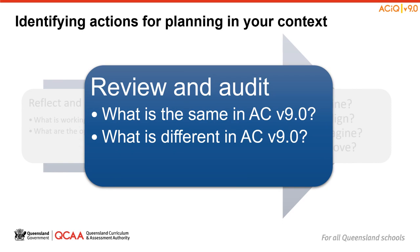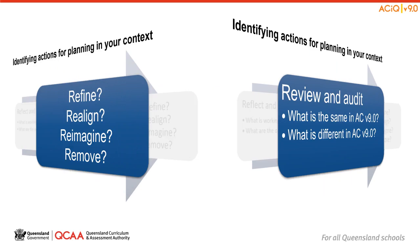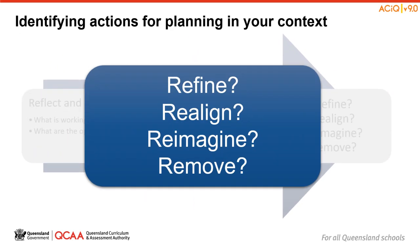As we have worked through both sessions 1 and 2, we've been in the review and audit phase, considering the similarities and differences we've observed in the Understand this Learning Area and Curriculum Elements sections of the Australian Curriculum version 9 for English. Let's now turn our attention to what these similarities and differences might mean for our Teaching and Learning and Assessment Plans to identify some actions for ourselves from here. With the information you now have from participating in these sessions, you can start to make some decisions about how much you may need to refine, realign, reimagine or remove from your current programs to meet the requirements for the Australian Curriculum version 9 for English.